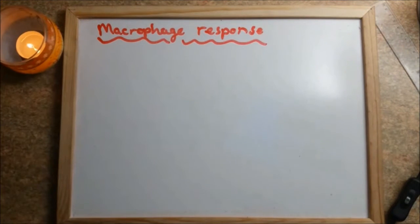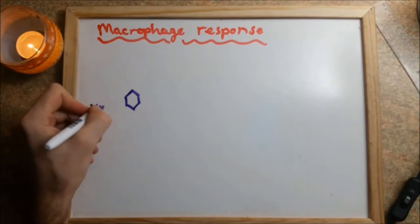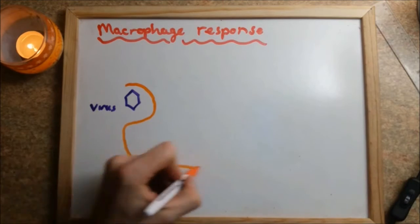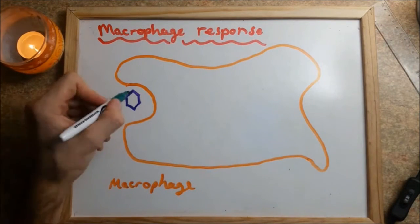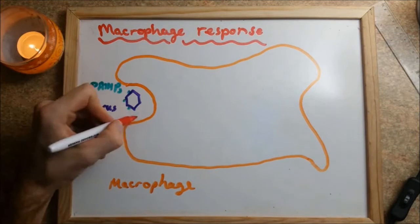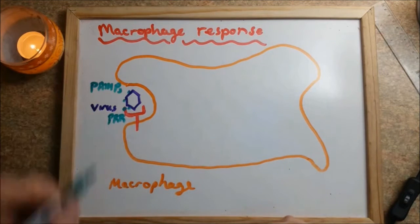However, if the barriers are breached, phagocytes such as macrophages or dendritic cells respond by engulfing the virus via phagocytosis. Viral pathogens have proteins bound to their capsid called PAMPs that are recognized by PRRs found on toll-like receptors.